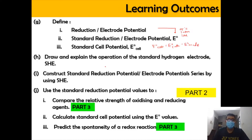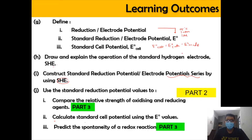In the next part, we're going to explain the operation of the Standard Hydrogen Electrode, or SHE. Once we've done that, we're going to construct a potential series according to SHE, and also do some calculations regarding the standard cell potential using the E⁰ values of E⁰cathode and E⁰anode.